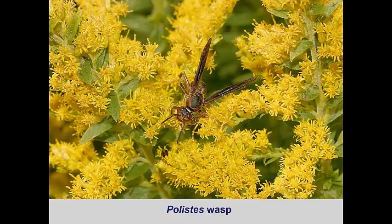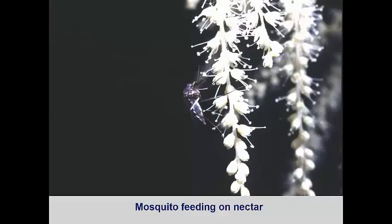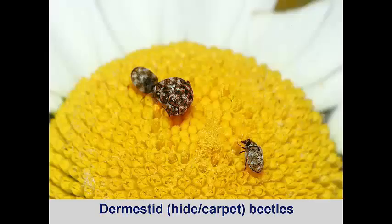Have you ever noticed that a lot of wasps visit flowers? They too are collecting nectar and eating pollen to provide them with the energy needed to perform their other tasks, and while doing this they are also pollinating the flowers. Even the annoying mosquitoes can be pollinators — the males especially only feed on nectar of flowers, so they are considered to be beneficial pollinators. Some beetles are attracted to flowers that produce odors that mimic rotting animals or feces. Other beetles can be attracted to milder fragrances; in this case, a Shasta daisy has attracted several dermestid beetles that are eating the pollen, and these beetles are also pollinating the plant.